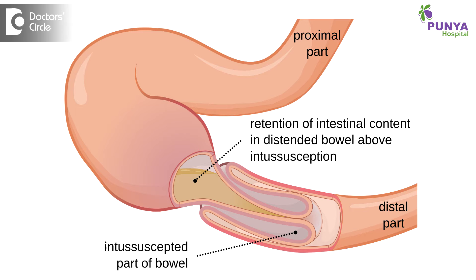Intersusception in adults. The term intersusception means — we usually relate this term in relation with the intestine, particularly the small intestine, though large intestinal intersusception is also seen. Intersusception is when the intestine gets into the lumen of another continual part of the adjacent intestine.